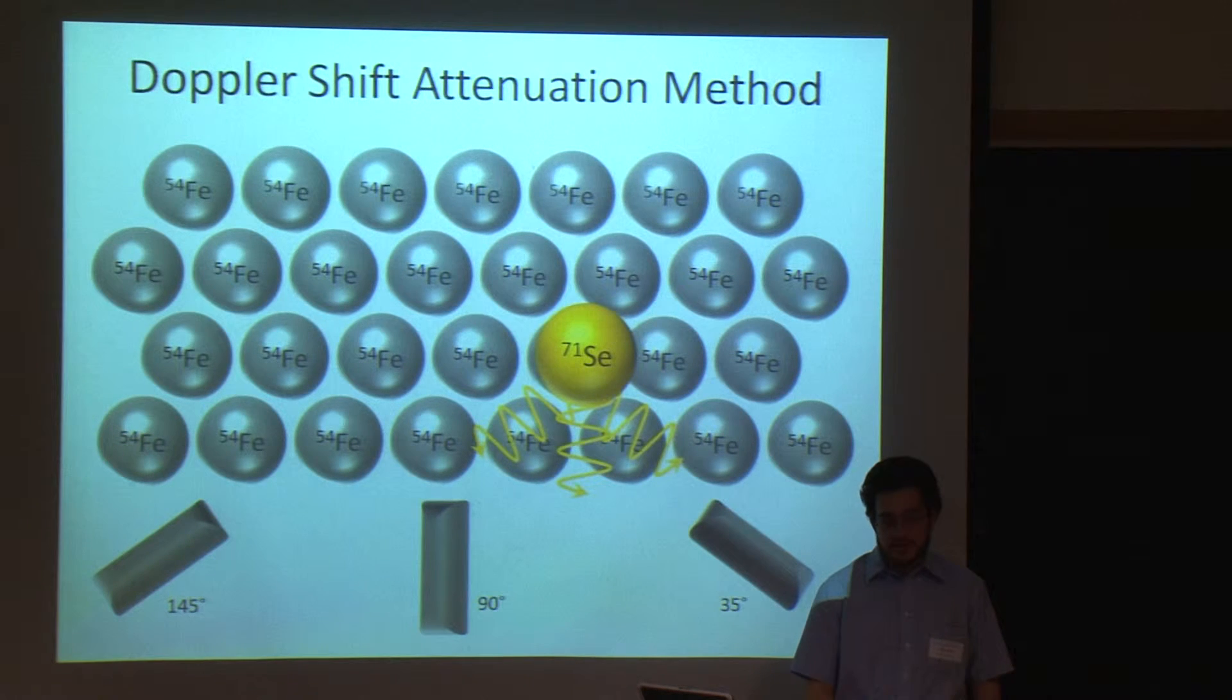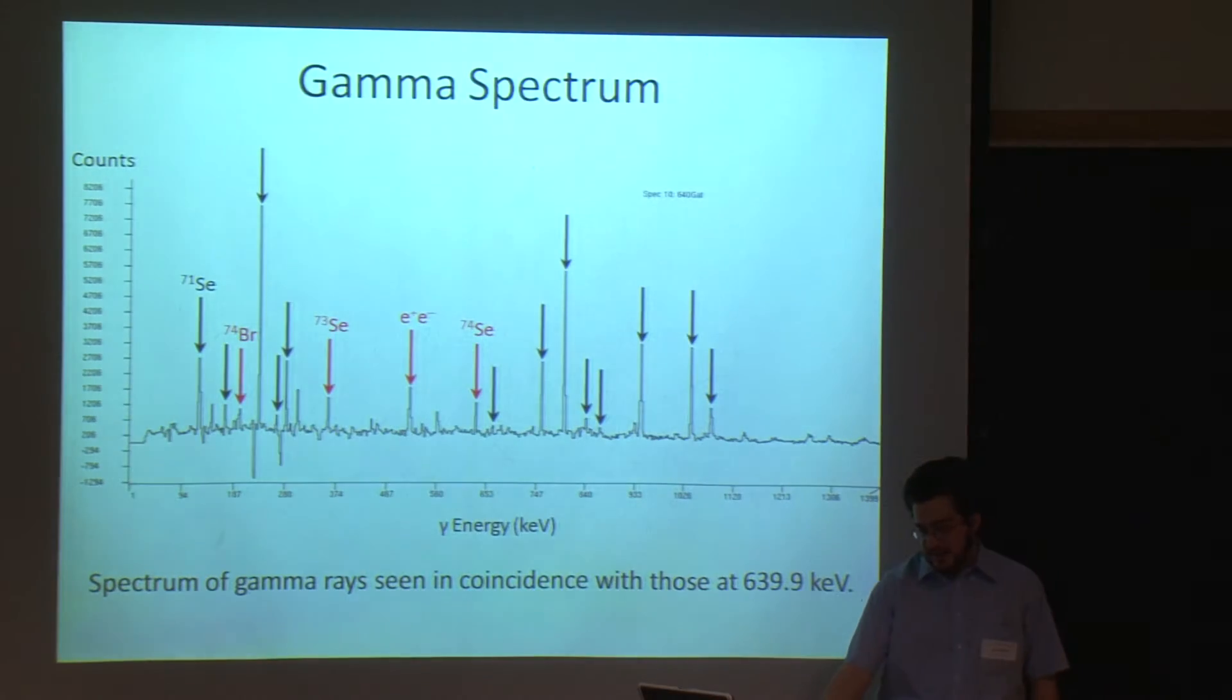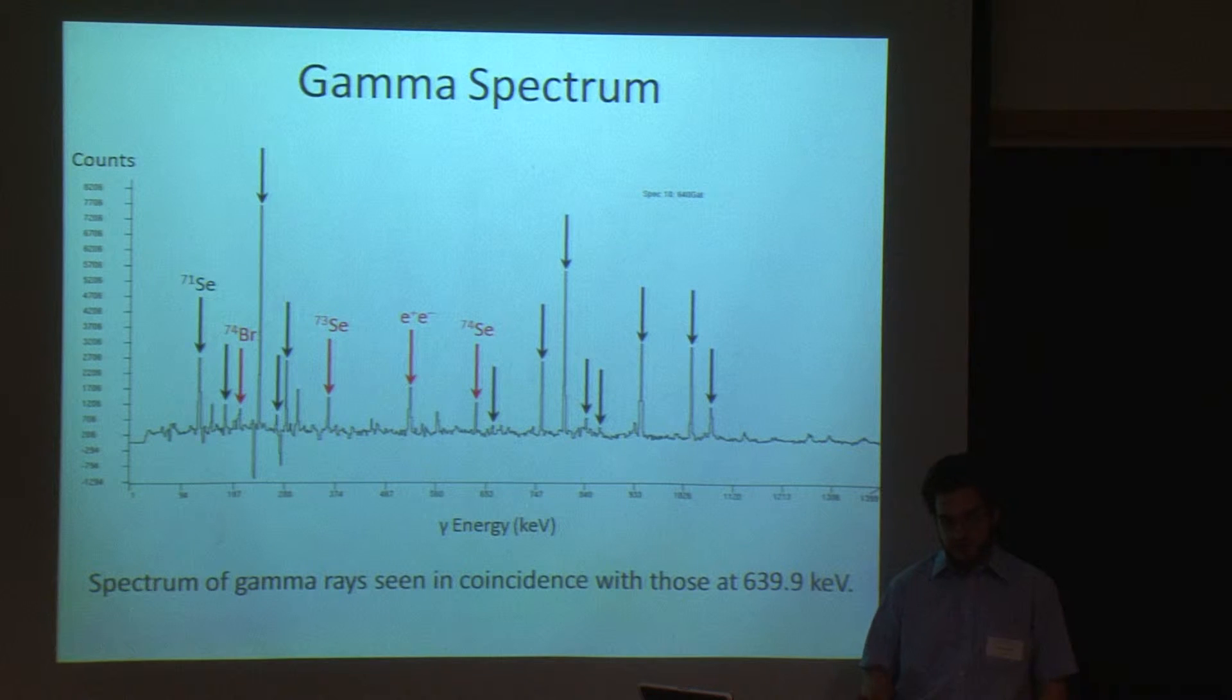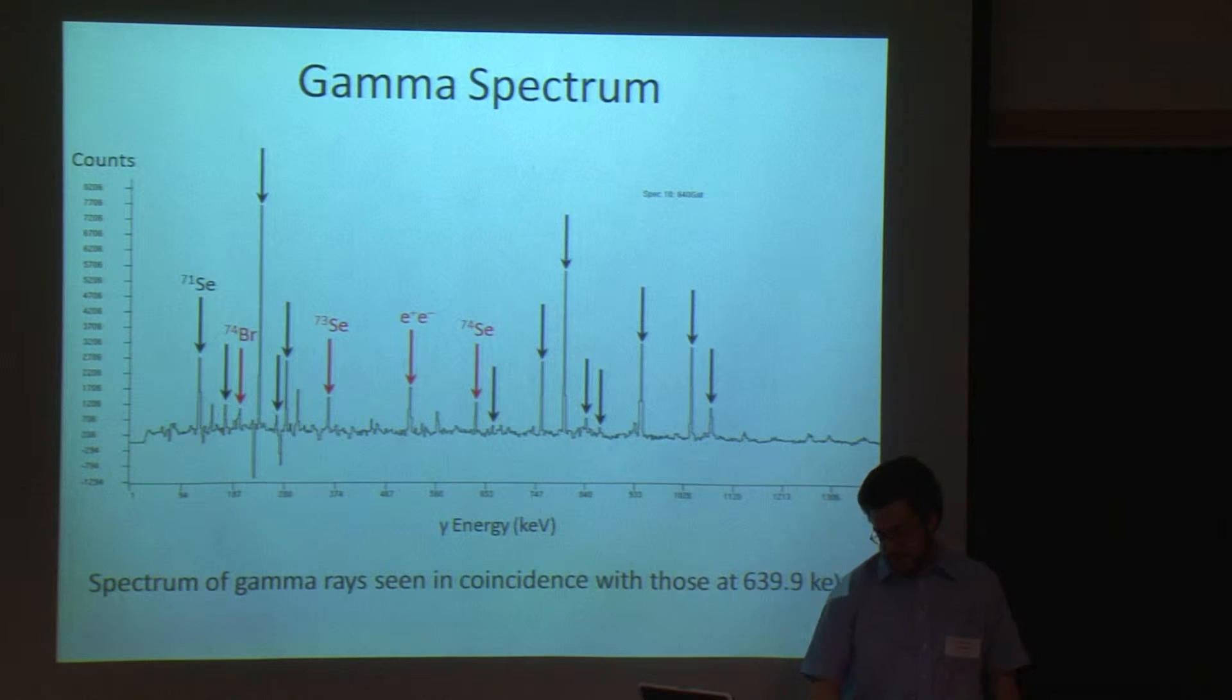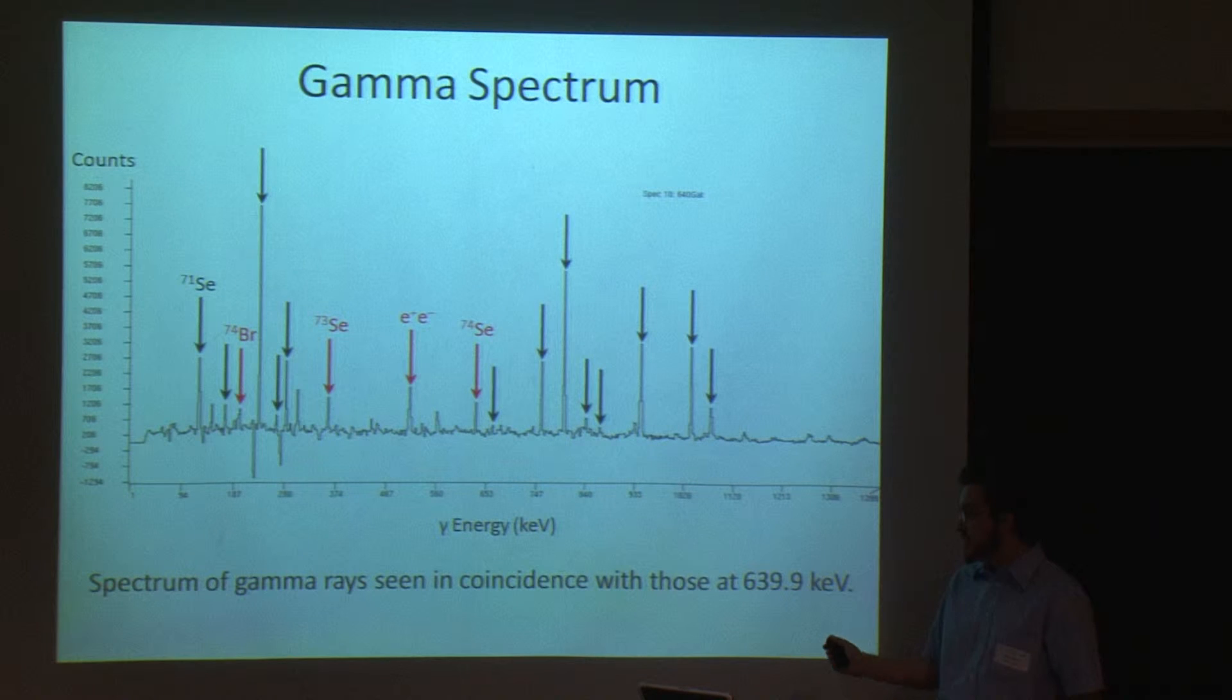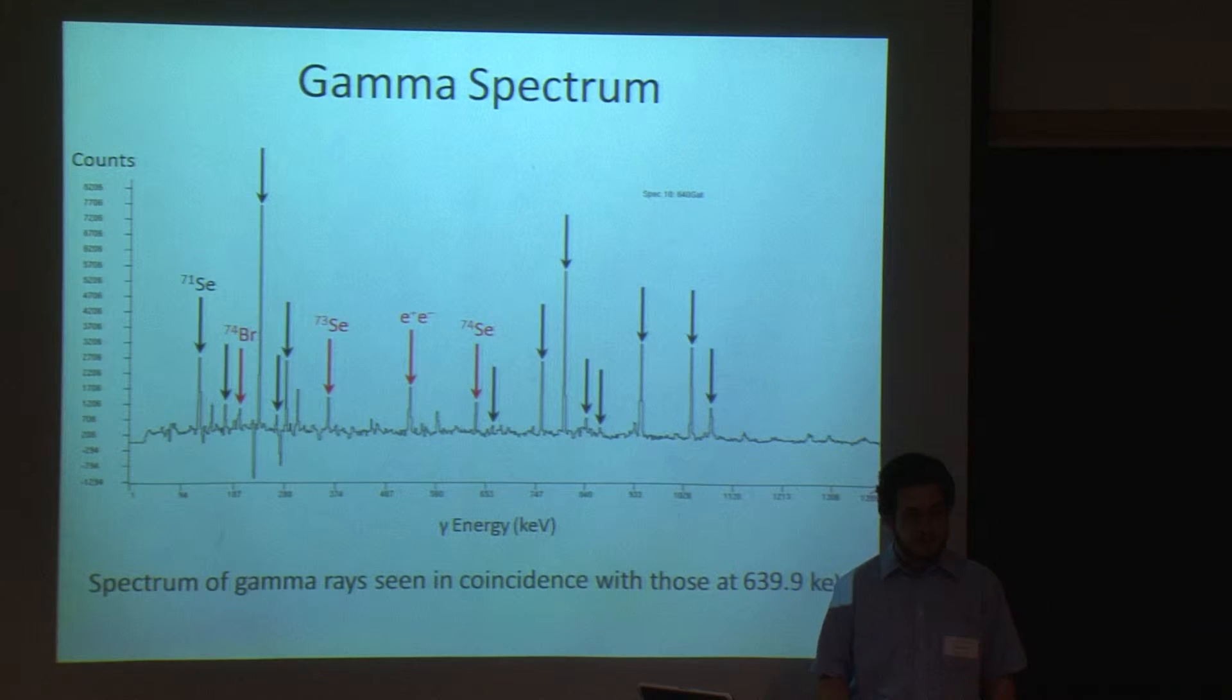My work primarily involved using computer programs that simulate this process to determine the best fit for the lifetime of each individual state. An individual nucleus will emit several gamma rays in quick succession, less than 100 nanoseconds, and this is called being in coincidence. And we use this to be sure that the gamma rays did, in fact, come from the same nucleus. So, here is a chart of all the gamma rays that we're seeing in coincidence with a very prominent transition at 639 keV. And most of these peaks correspond to other transitions in selenium-71. A few of them correspond to other nuclei that have a transition near 639 keV. And there's also this electron-positron annihilation, which pretty much shows up everywhere.